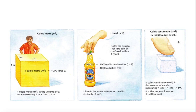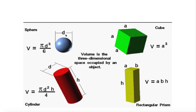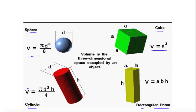Volume can be expressed in cubic meters for liquids inside a bottle, or in cubic centimeters. For defined shapes: if it is a sphere we use the sphere formula; if it is a cube we use the cube formula; if it is a cylinder we use the cylinder formula; and if it is a rectangular prism, volume equals length times width times height.